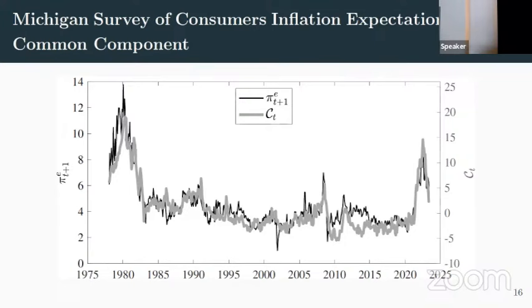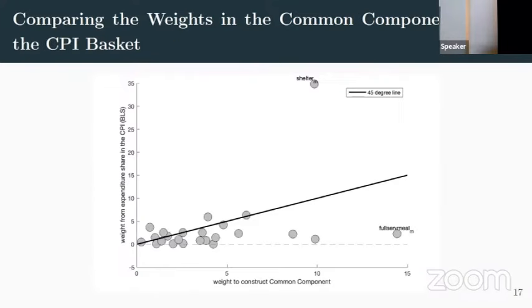One interesting thing about this common component is what aspects are overweighted relative to their CPI basket weight. If you're extracting a common component, you're not weighting things as they are in the CPI — these are the information weights that come out. Some things are more informative about the common component. For example, one that's really overweighted relative to its CPI weight is full service meals — basically restaurants — which is a whole bunch of things at the same time: services, food, all these things. Something that's highly underweighted relative to its CPI share is shelter.